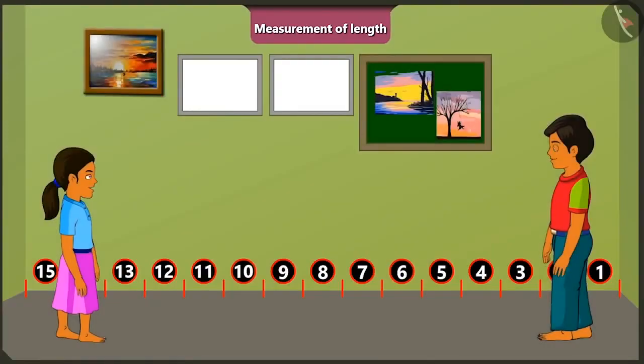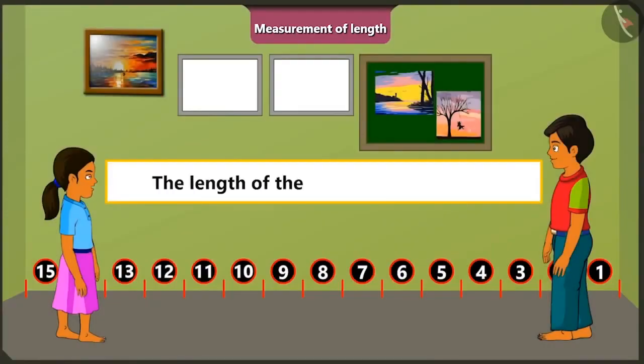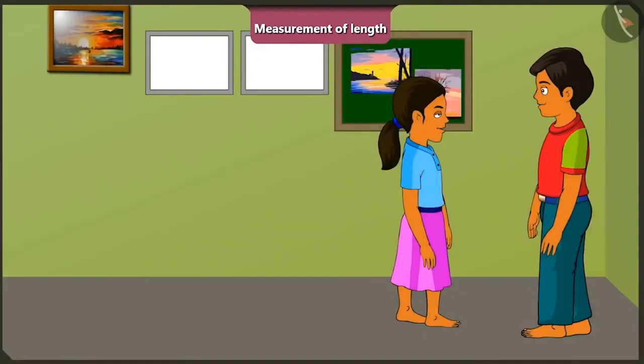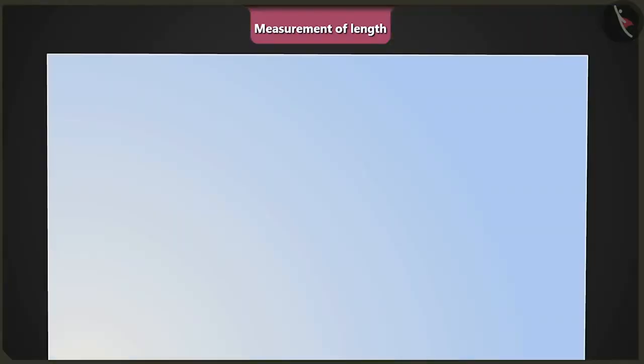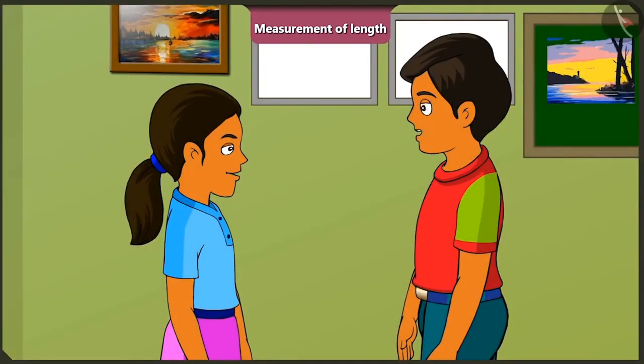So the length of this room is equal to 15 foot spans. Absolutely correct. Now write the length of this room down in your notebook. So the length of my room is 15 foot spans. Absolutely correct. Come on, I will give you a few more objects to measure the lengths of. Okay Chintu.